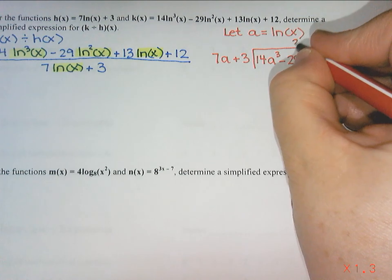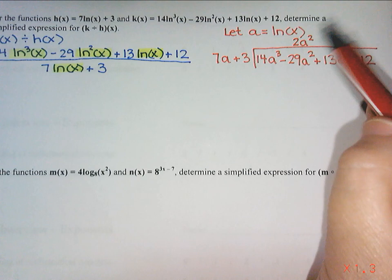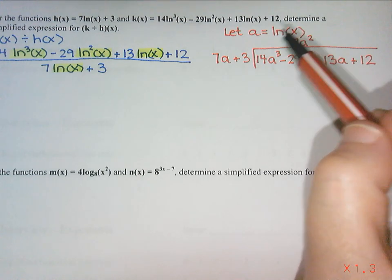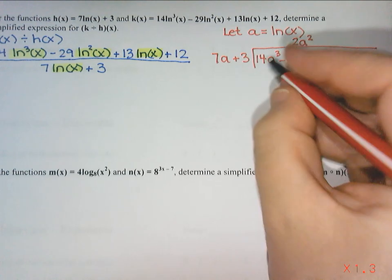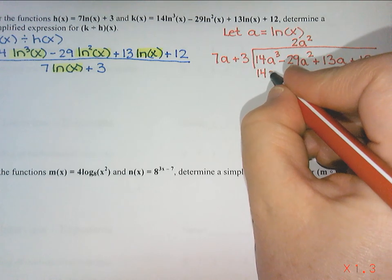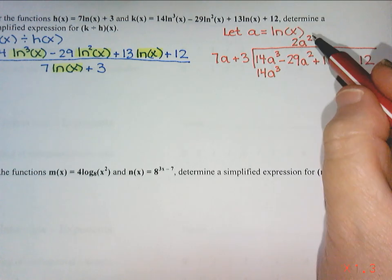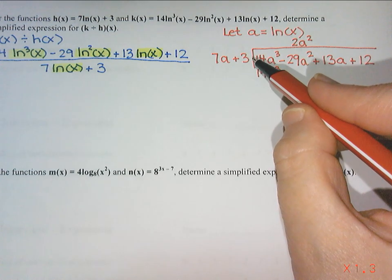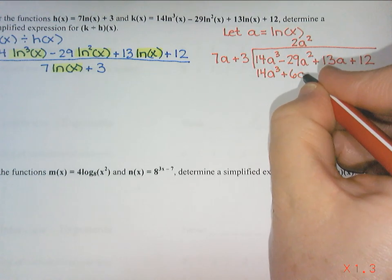And then I'm going to multiply this by everything in the divisor. So 2a squared times 7a is 14a cubed. If I don't get that, we've done something wrong. 2a squared times 3, this is the easy part to forget, that is 6a squared.